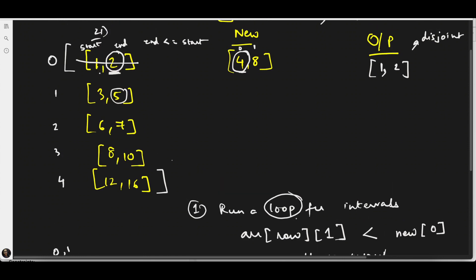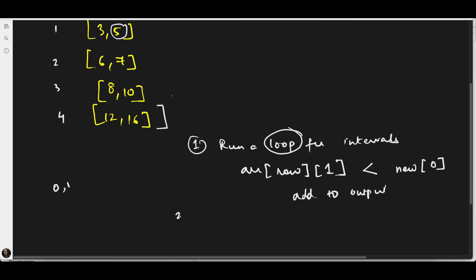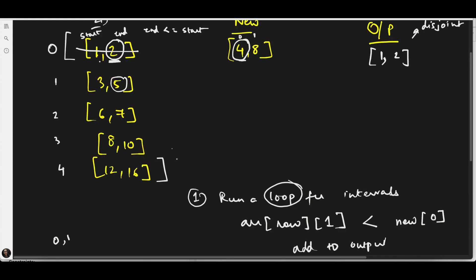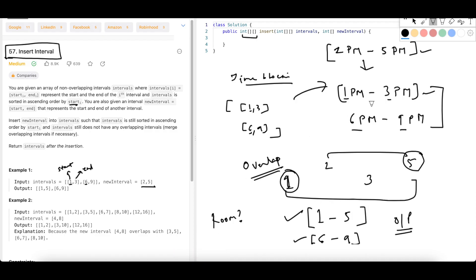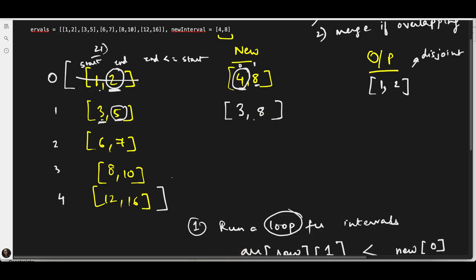Now 3 and 5 does not honor the condition since 5 is not less than 4, so we proceed to the second logic: actually merging the intervals. When merging, we take the minimum of the start pointers — among 3 and 4, minimum is 3 — and the maximum of the end pointers — among 5 and 8, maximum is 8. So we merge. Similarly, going back to the earlier example, we took the minimum of 2 and 1 which is 1, and the maximum of 3 and 5 which is 5. So 3 and 5 and 4 and 8 are merged, and the new interval is now 3 to 8.